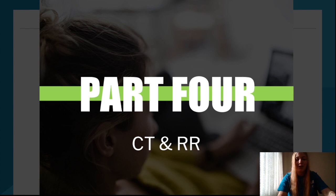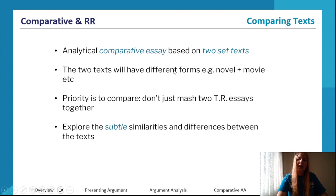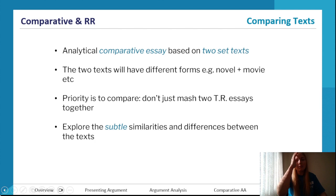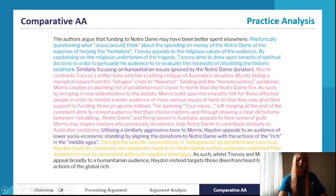Now we're going to look at comparing texts and reading and responding — comparative essays and text response essays. For comparing texts, it's going to be an analytical comparative essay based on two set texts. The requirement proposed by VCAA is that both texts have to have different forms, such as a novel and a movie, or commonly a novel and a play. The priority is to compare — it's all similarities and differences.